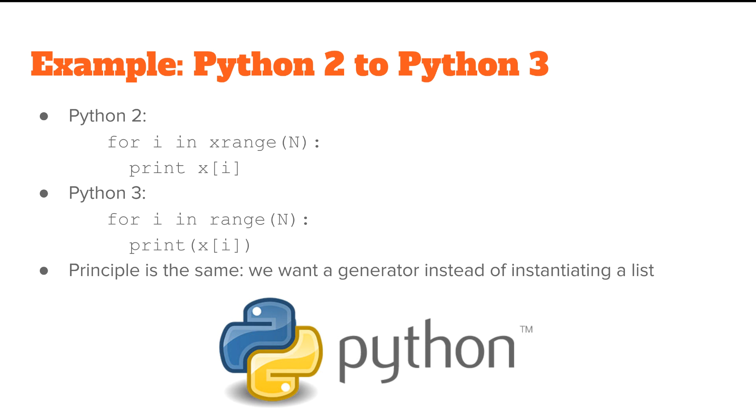As an example, consider a for loop using the xrange function in Python 2. We would use xrange because the range function returns a list, which is slow and unnecessary. In Python 3, xrange is removed and the range function takes its role.